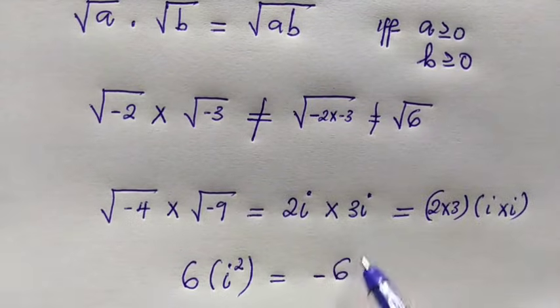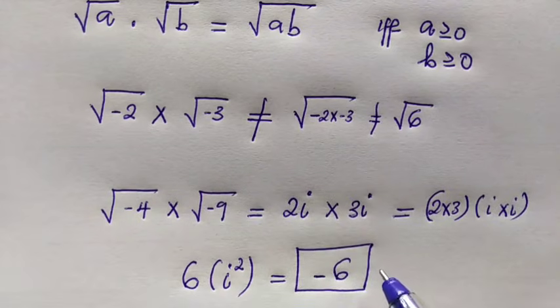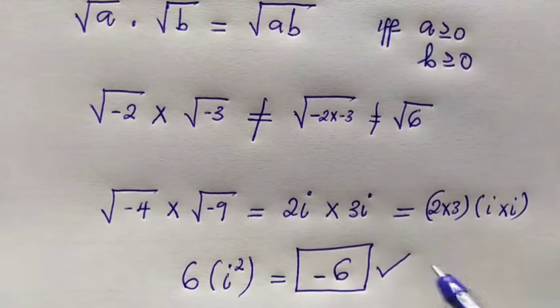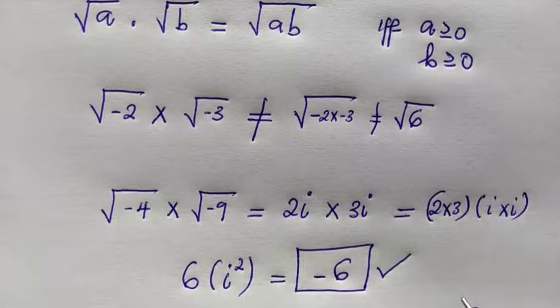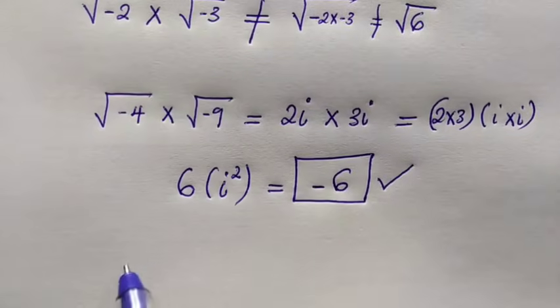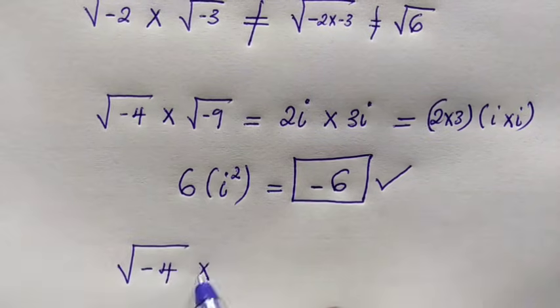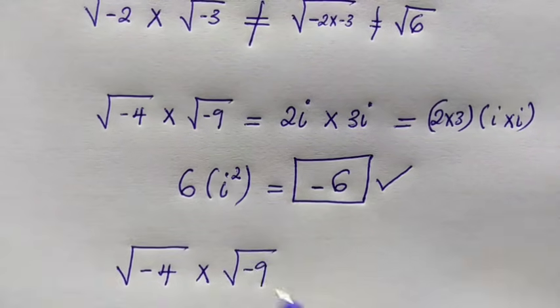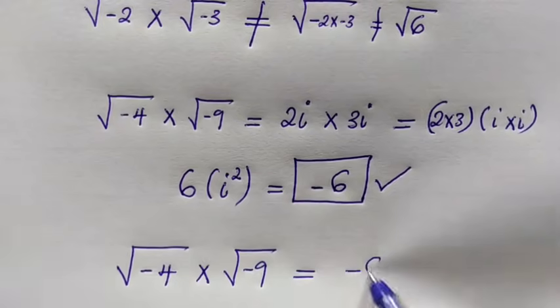our answer will be negative 6. So therefore, the correct answer to the problem is negative 6 and not positive 6. So in our conclusion, root of negative 4 times root of negative 9 is equal to negative 6.